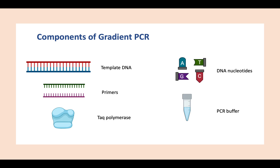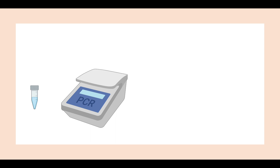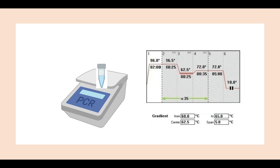Now let's talk about the components of gradient PCR. Gradient PCR also utilizes template DNA, primers, DNA nucleotides, Taq polymerase, and PCR buffer — just like in a conventional PCR. Once you have prepared your sample, you load it into your thermocycler or PCR machine.